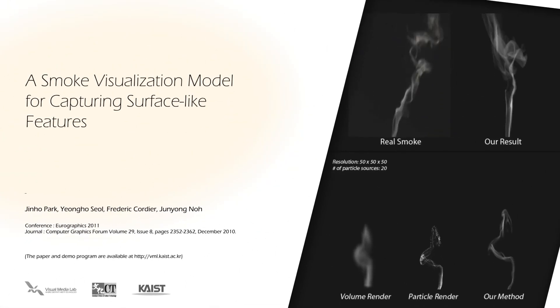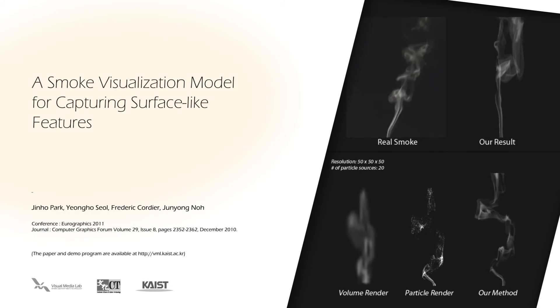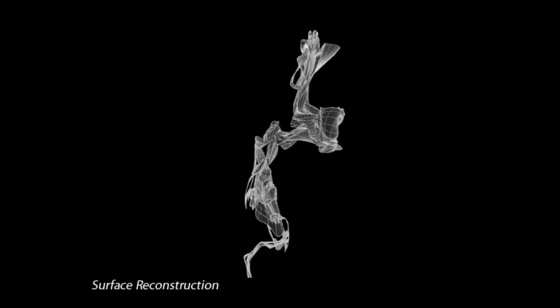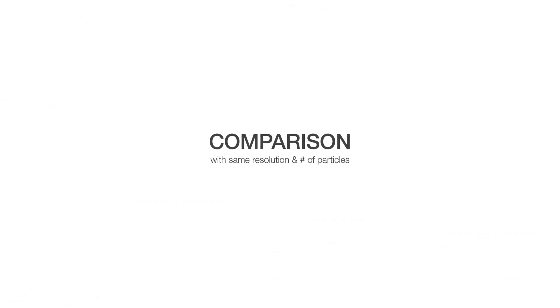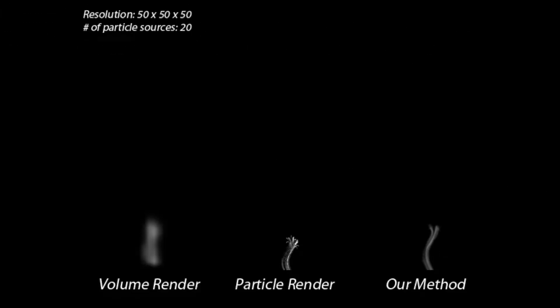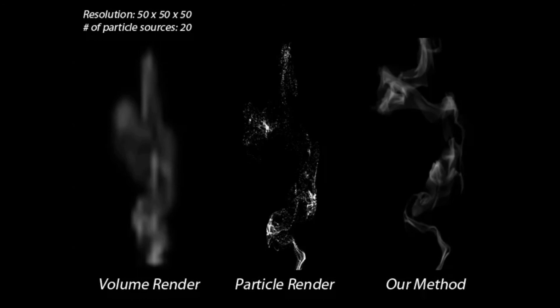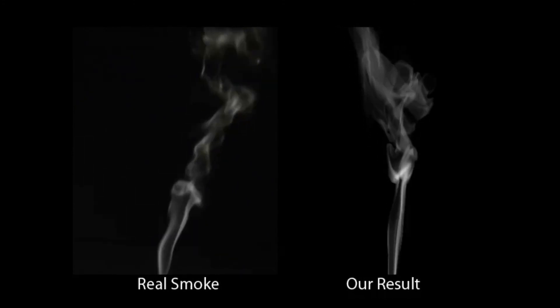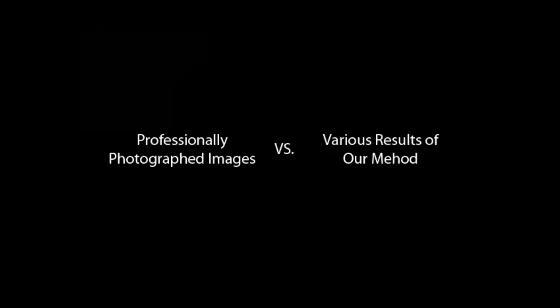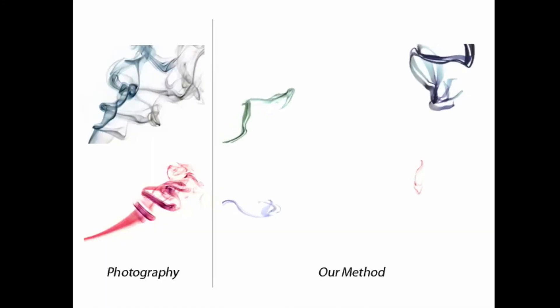We present a novel smoke visualization model for capturing surface-like features. Particles simulated from a source are affected to form streak lines, and closed streak lines are clustered to create NURBS surfaces. The final images are obtained by applying an opacity map. Our model is superior to conventional volume or particle rendering methods in the low resolution domain. Similar to real smoke, the synthesized images show surface-like aspects with prominent control in a soft transition, and various results are produced to mimic actual photos with aesthetic smoke.